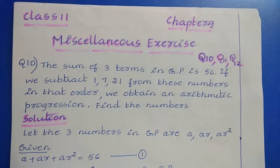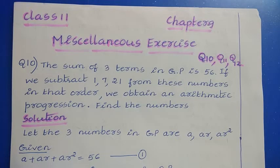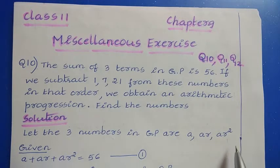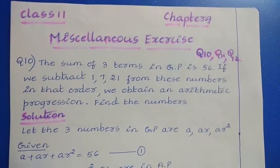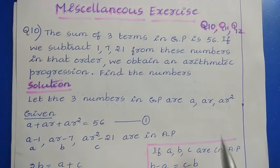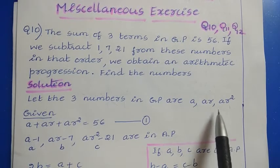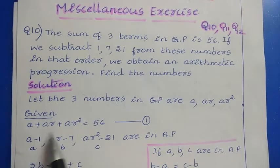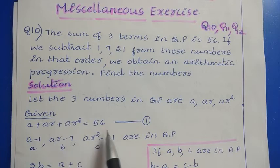Q10. The sum of 3 terms in geometric progression is 56. If we subtract 1, 7, 21 from these numbers in that order, we obtain an arithmetic progression. Find the numbers. Let us take the 3 numbers of geometric progression as A, AR and AR squared.